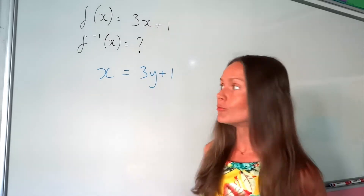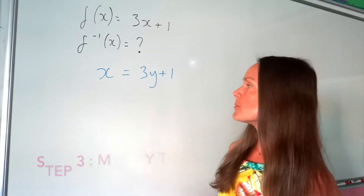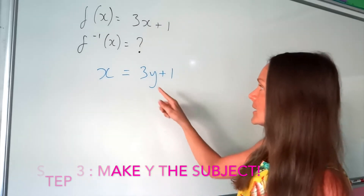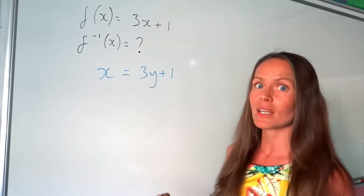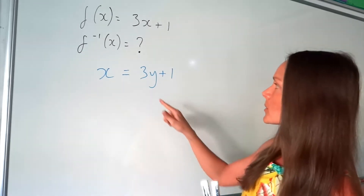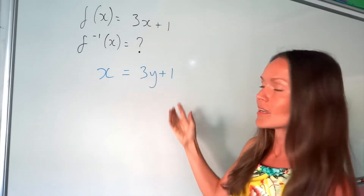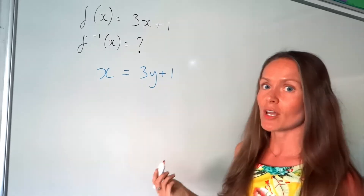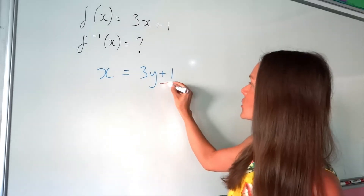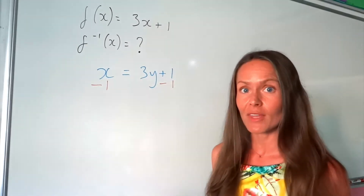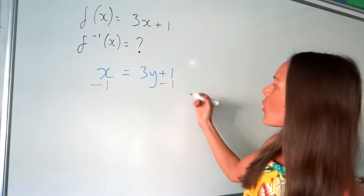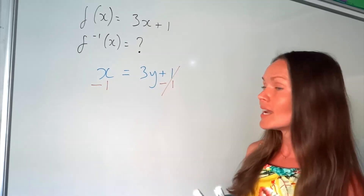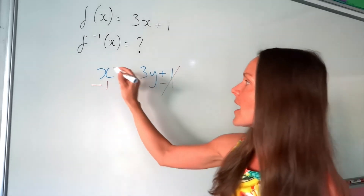Next we have to rearrange this equation to make y the subject. That just means rearrange to get y equals. I need to undo everything that's happening around y until y is by itself. So I'm going to leave whatever's closest to y together for the moment, and I'm going to get rid of this plus 1. The reverse of plus 1 is to subtract. Just remember to do the same thing on both sides of the equation to keep it balanced. On the right-hand side, 1 minus 1 is just 0, and I'm left with 3y. And on the left-hand side, I've now got x minus 1.